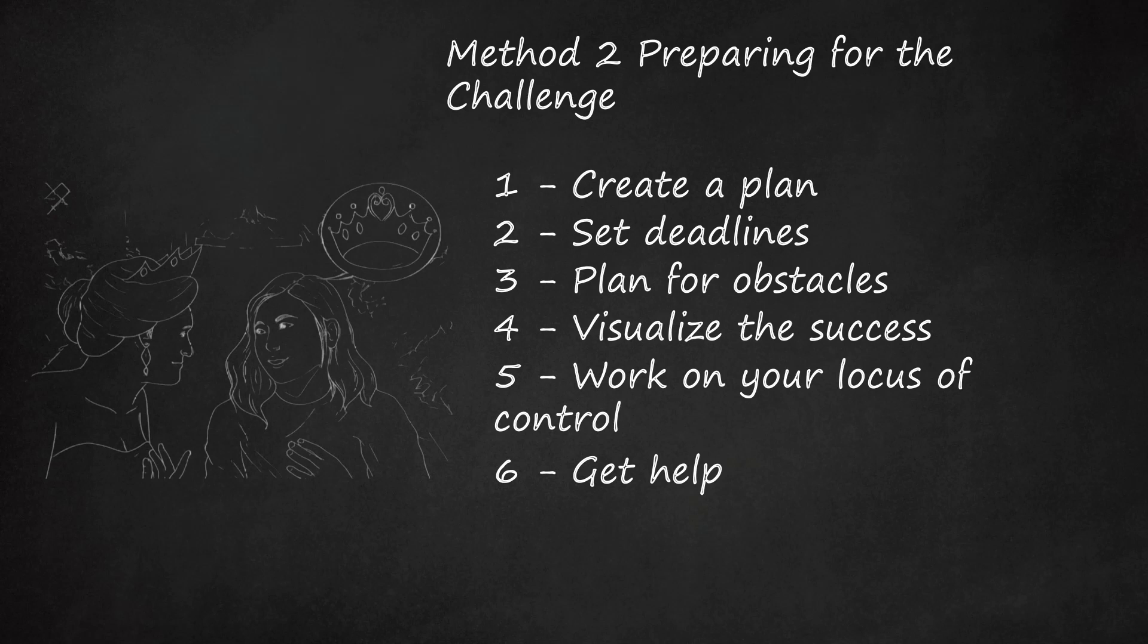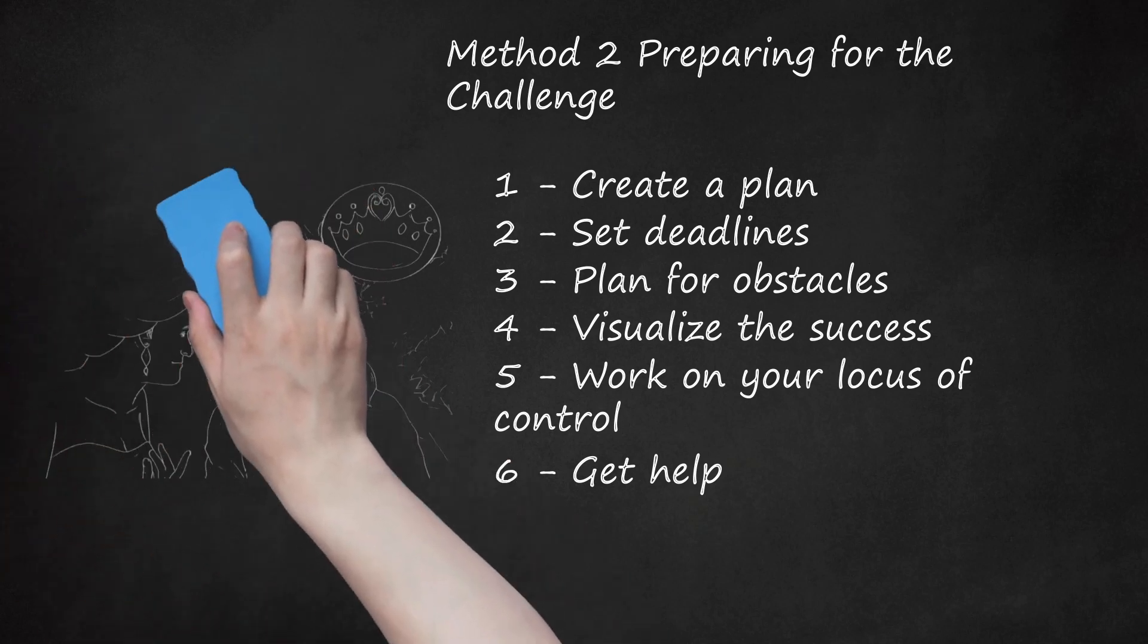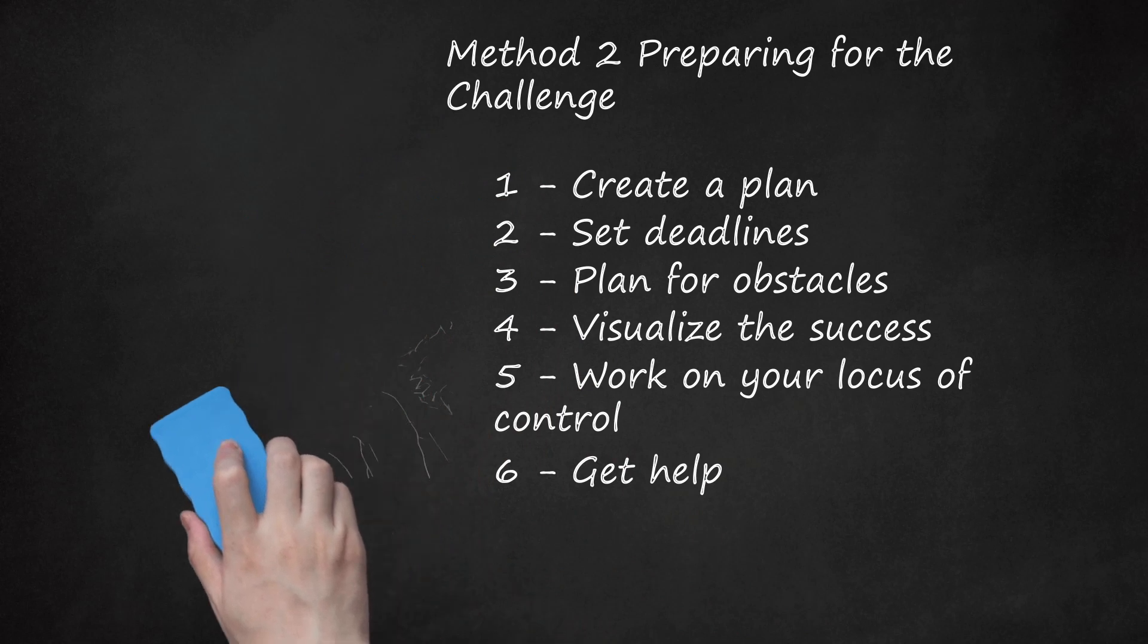If neither of these options is appealing, you can also try to find an accountability partner to do the challenge with. This is someone you can check in with daily to let them know how your progress is going. They will do the same, updating you on their own 16-week challenge. This can increase motivation for both partners. Your accountability partner doesn't even need to be working on the same goal as you. If you don't know anyone who is willing to be your accountability partner, look beyond your friends and family. There are online communities that exist for this purpose.